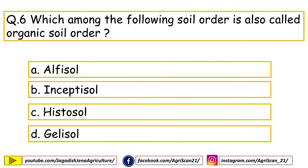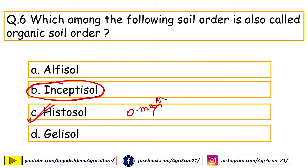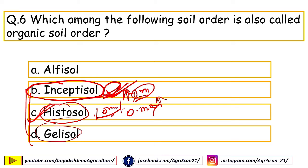Next question: which among the following soil orders is also called the organic soil order? Options are Alfisol, Inceptisol, Histosol, Gelisol. The right answer is Histosol. Histosol has the highest organic matter content among all soil orders. Inceptisol, Histosol, and Gelisol together contribute around 90% of total soil organic carbon. Histosol is found in limited area but has very high organic matter content, while Inceptisol is a widespread order and is also a maximum contributor.